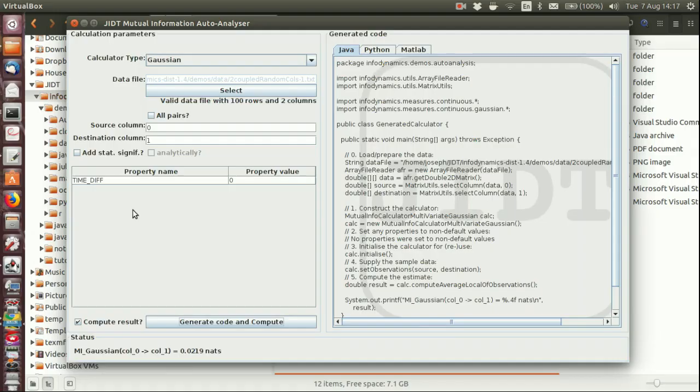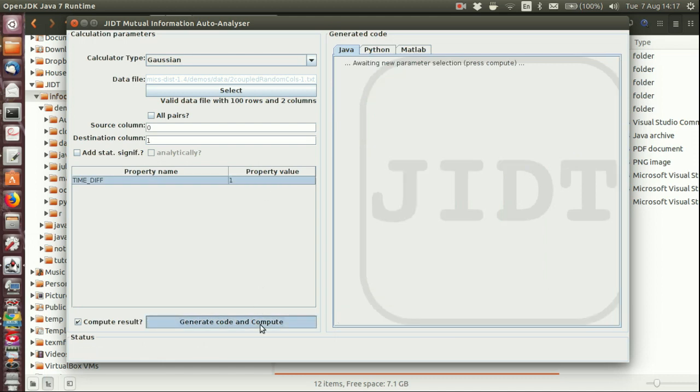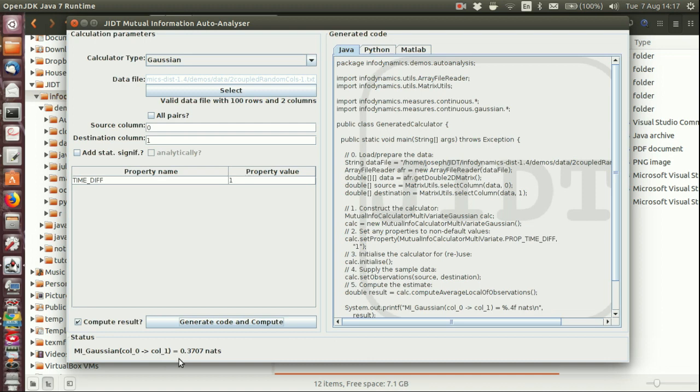Let's have a look. We'll set our time difference to one and compute our result again and this time we see a result of 0.37 nats which is obviously a much stronger relationship than we saw between the variables at the same time step. When we look at that lag we see the real relationship from the source to the target.